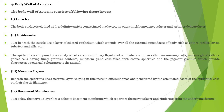An important thing is that the endoskeleton is a living endoskeleton. The body wall consists of the following tissue layers. First, the cuticle: the body surface is covered with a definite cuticle consisting of two layers — an outer thick homogenous layer and an inner delicate layer. Just beneath the cuticle is the epidermis, called epithelium, which extends all over the external appendages.